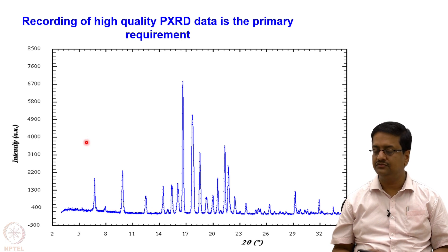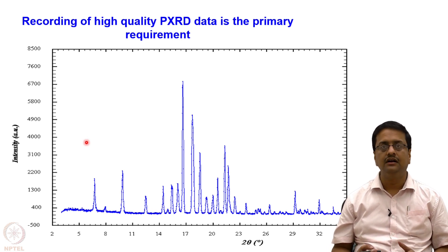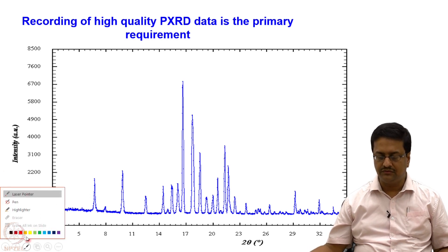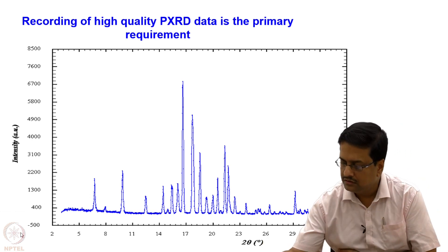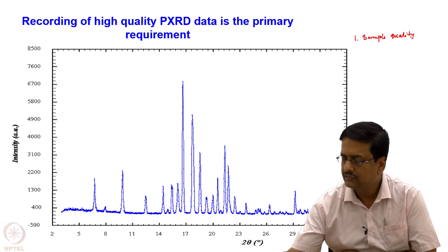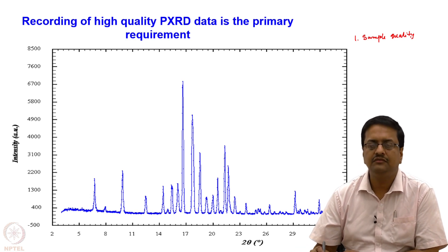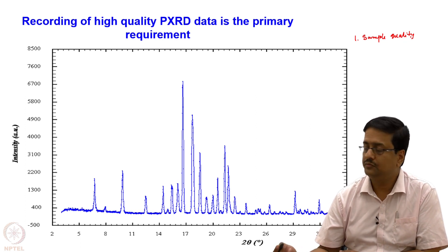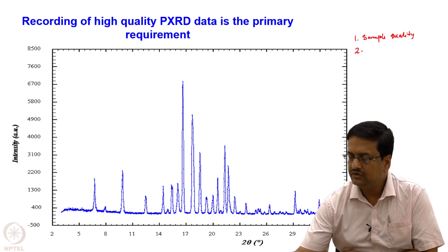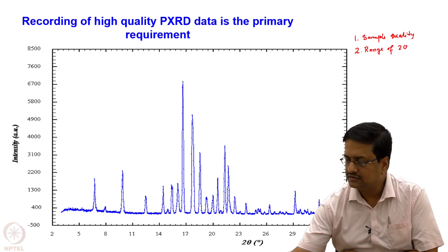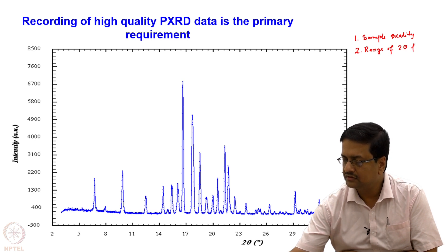The first requirement is to record very high quality PXRD data. For data collection, the sample must be finely powdered, free of moisture, and free-flowing. We also need to know the 2θ range for the sample. Since we do not know this a priori, we can mount the sample and quickly collect data — about 10 degrees per minute — from 3 to 70 degrees 2θ to determine what range of peaks we are getting.